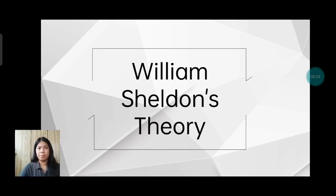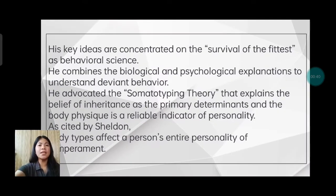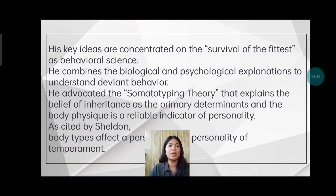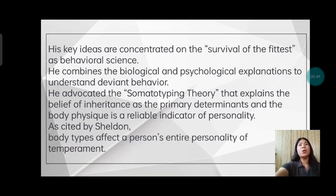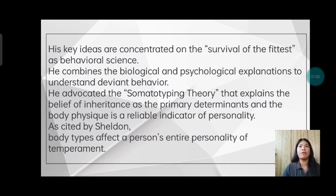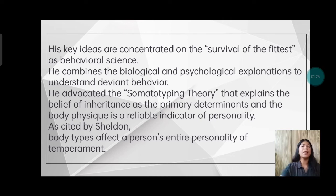So here is one of the three: William Sheldon's theory. His key ideas are concentrated on the survival of the fittest as behavioral science. Sheldon chose to employ beliefs about Darwin's theory. He also argued for an ideal type in which perfectly formed physique joins perfectly formed temperament and disposition. Any combination that deviated from this ideal was associated with disorders of both personality and behavior. He claimed a physical basis for all variations in personality and body build, combining biological and psychological explanations to understand deviant behavior.